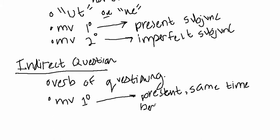And you're going to use perfect if the verb in your indirect question is happening at the time before your main verb.